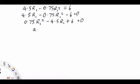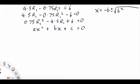Now that is something of the form AX squared plus BX plus C equals 0. Now the solution to that, the quadratic equation, is that X equals minus B plus or minus the square root of B squared minus 4AC over 2A. So we have A is 0.75, B is minus 4.5, and C equals 6.